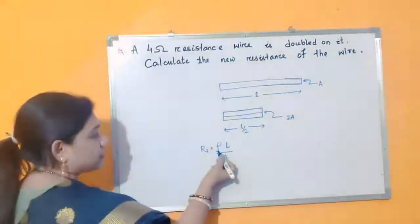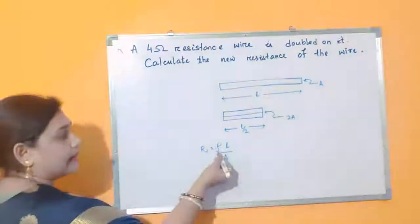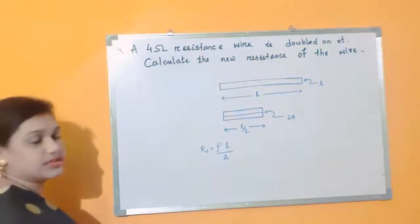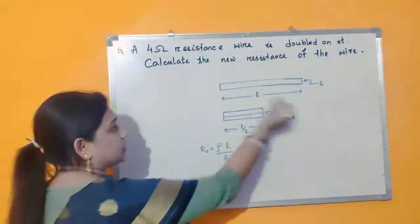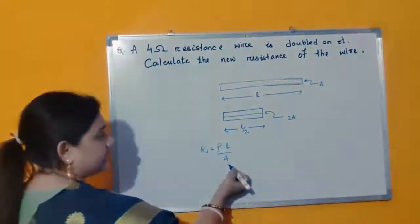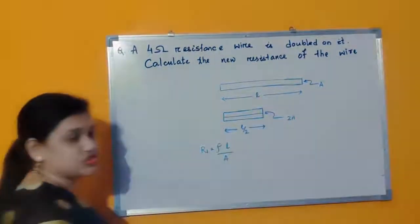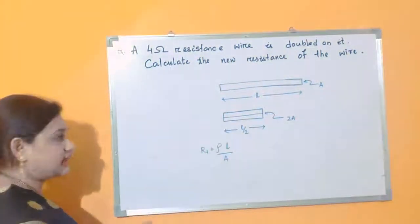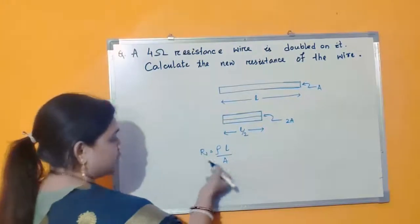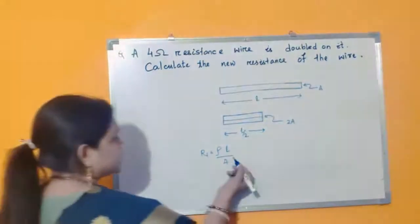So what is rho? Rho is the resistivity of the material — it is an intensive property of the material. L is the length of the wire and A is the area of cross-section, as you already studied in class. So this is our formula for the resistance of the wire.